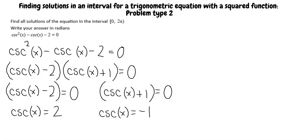Now, since we know that sine and cosecant are reciprocals, we know that cosecant of x equals 2 can be rewritten as sine of x equals 1 half, and cosecant of x equals negative 1 can be rewritten as sine of x equals negative 1.